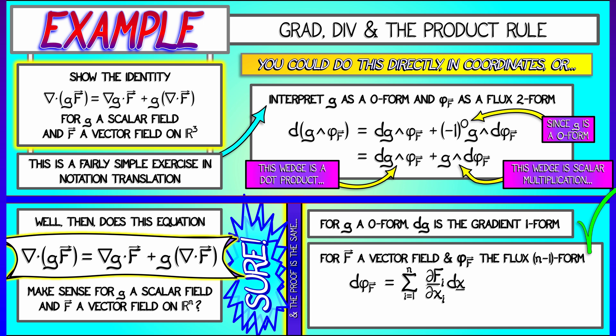Now, that can be interpreted as the divergence of f times the volume form in n dimensions. So, if we take that identity in vector notation, translate it to the language of differential forms, everything works out exactly as we did in 3D. It's all just the product rule.